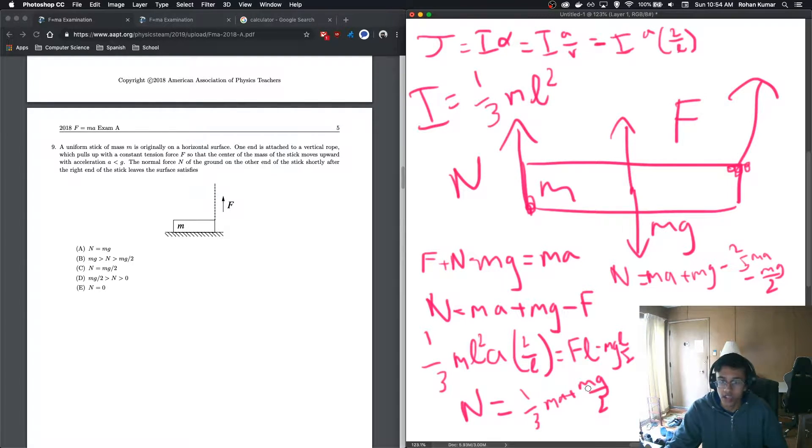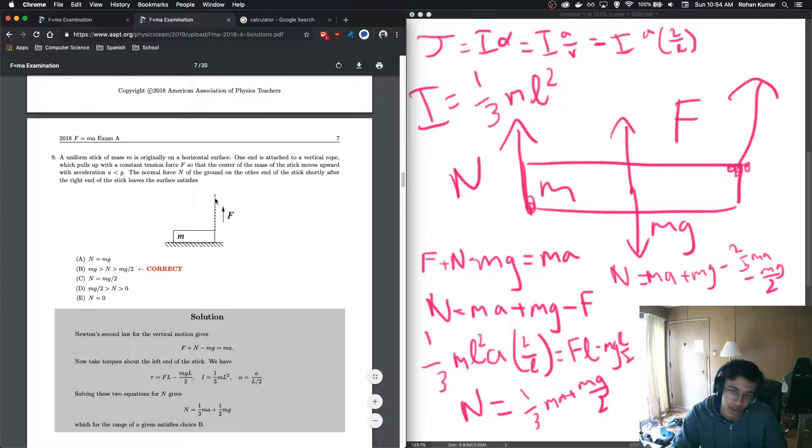And this gives us N equals one third MA plus Mg over 2. And since we know that A is less than G, this can't be greater than Mg. This can't be equal to Mg either. So it can't be A, but it can't be C because we know that our A is positive. So it must be B. So let us check our answer. Nice. We did it. That was a kind of annoying problem. I did not see the solution immediately, but we got it eventually. That's what matters.